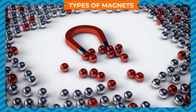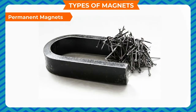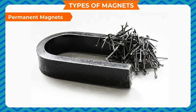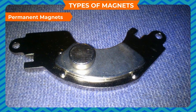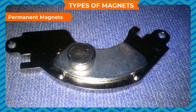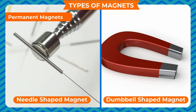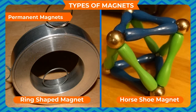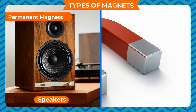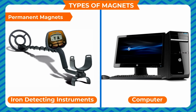On the basis of loss or gain of magnetic behavior, they are classified into two types. Permanent magnets retain their magnetic properties for a very long time; it is their natural magnetic behavior. These magnets are made from iron, nickel and cobalt. They come in many forms: bar magnet, horseshoe shaped magnet, needle shaped magnet, dumbbell shaped magnet and ring shaped magnet. These magnets are used in speakers, magnetic compass, cassettes, computers and iron detecting instruments.